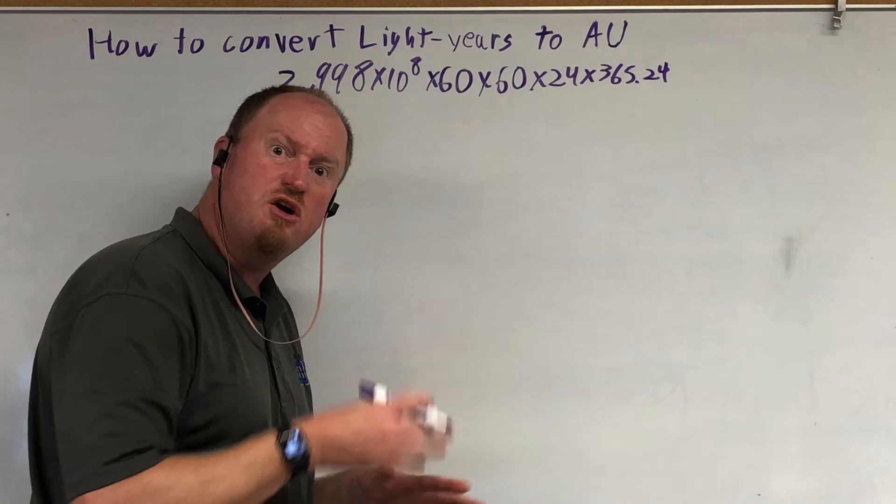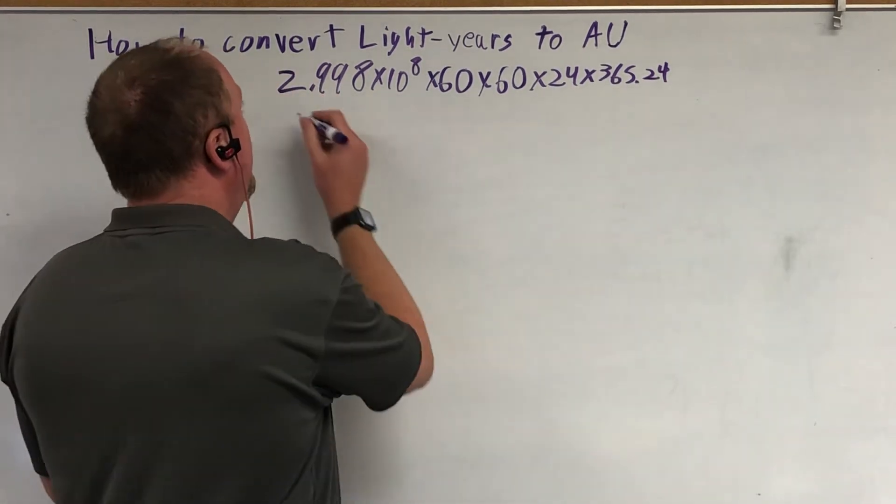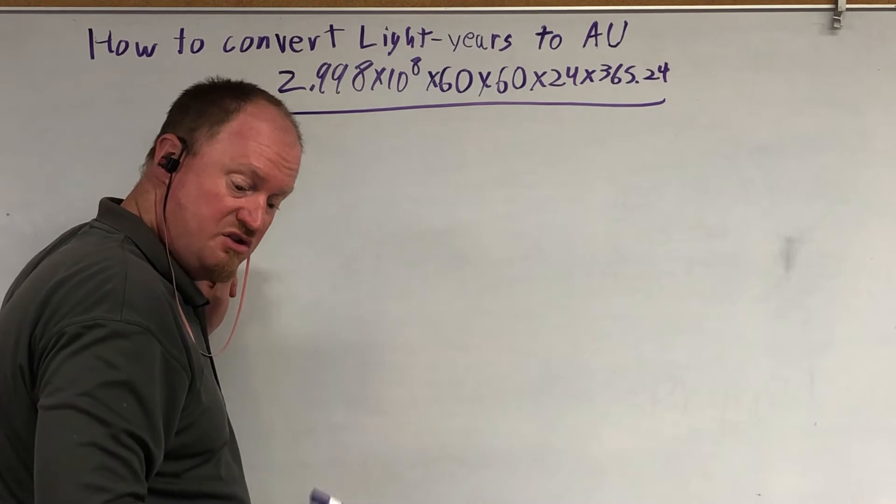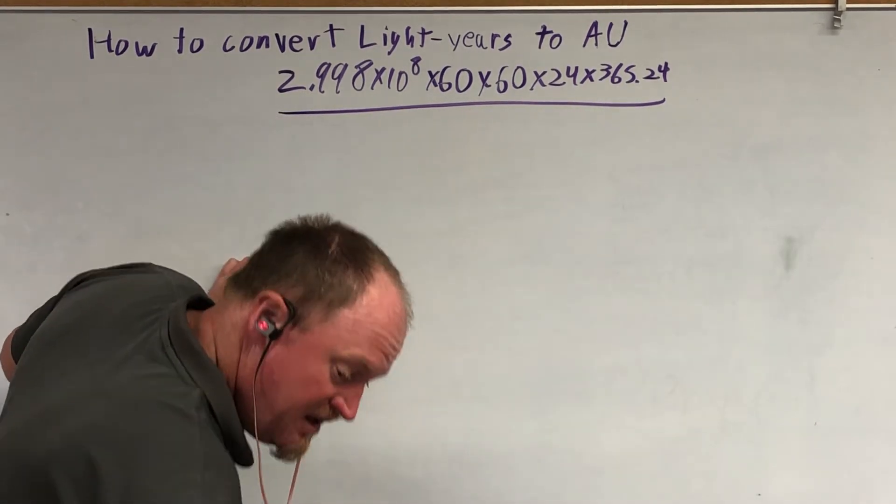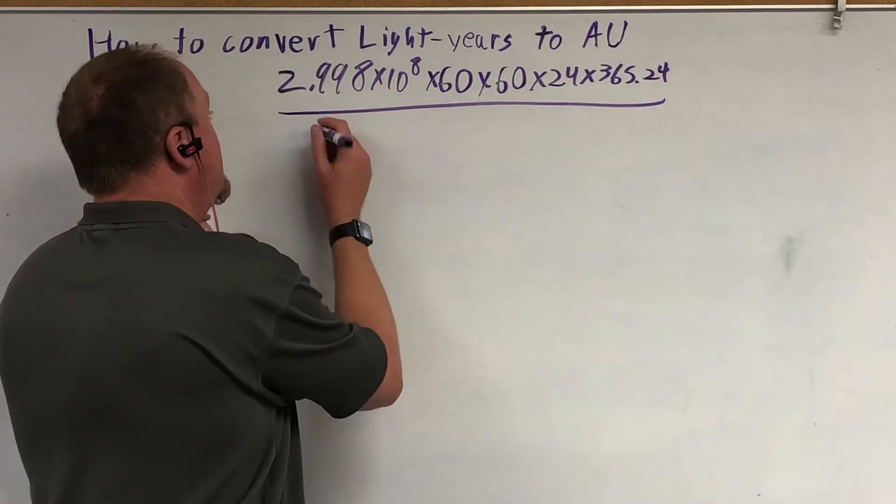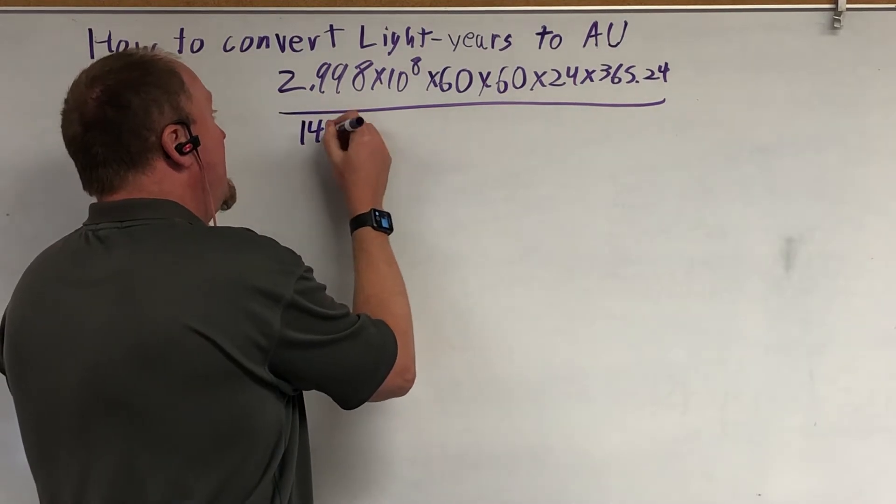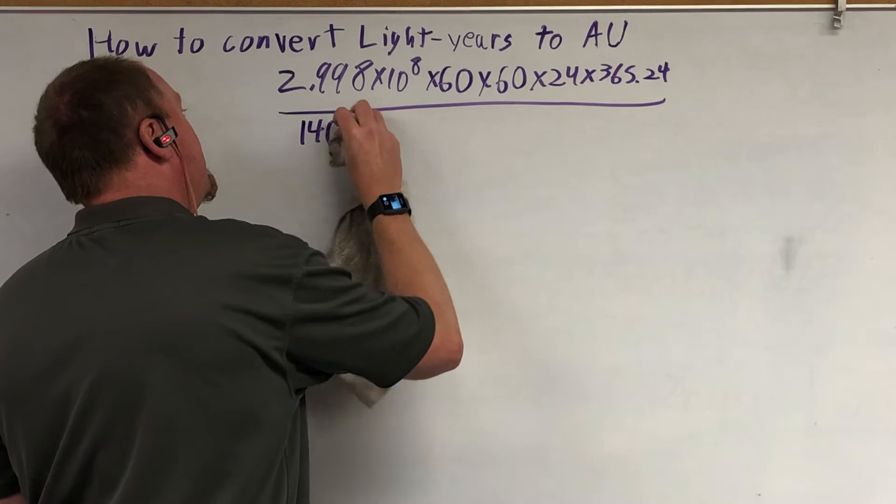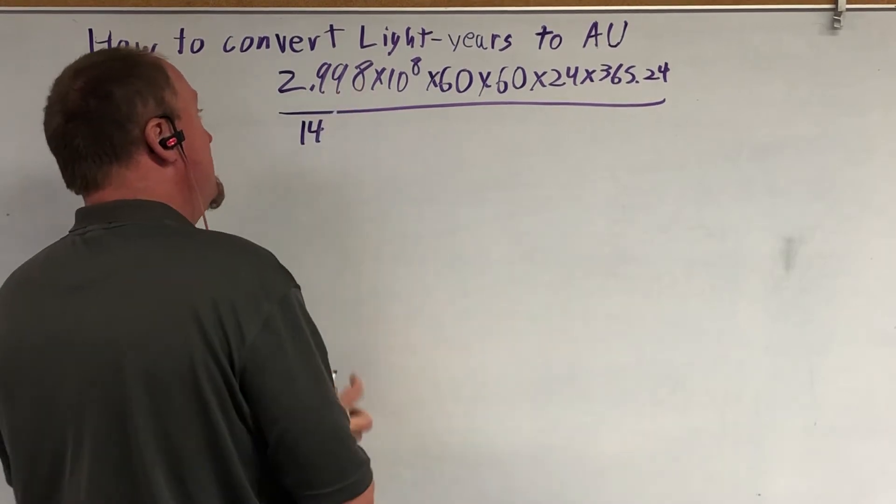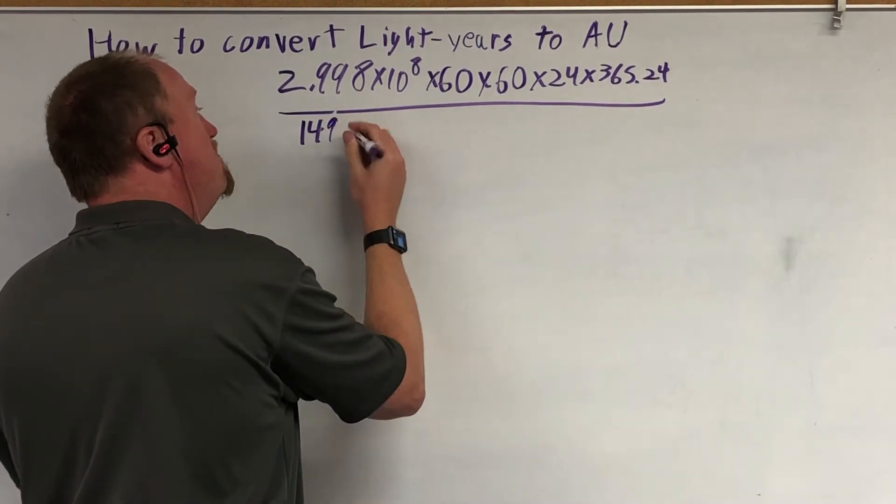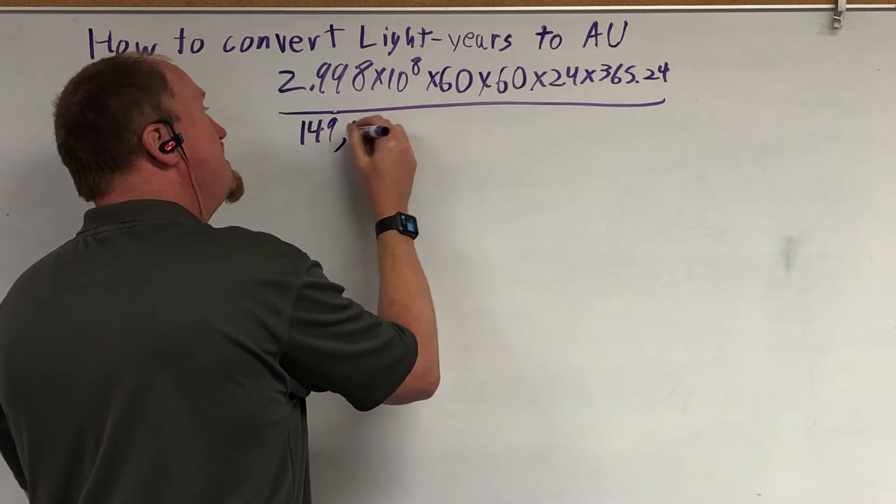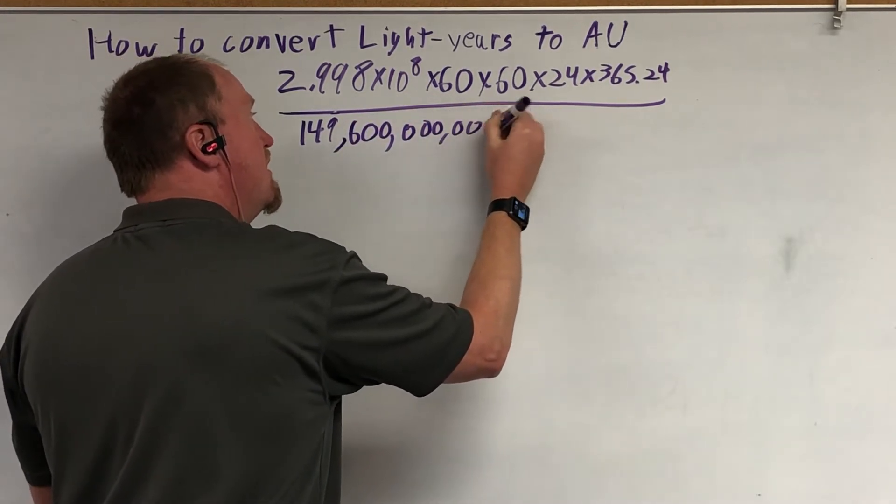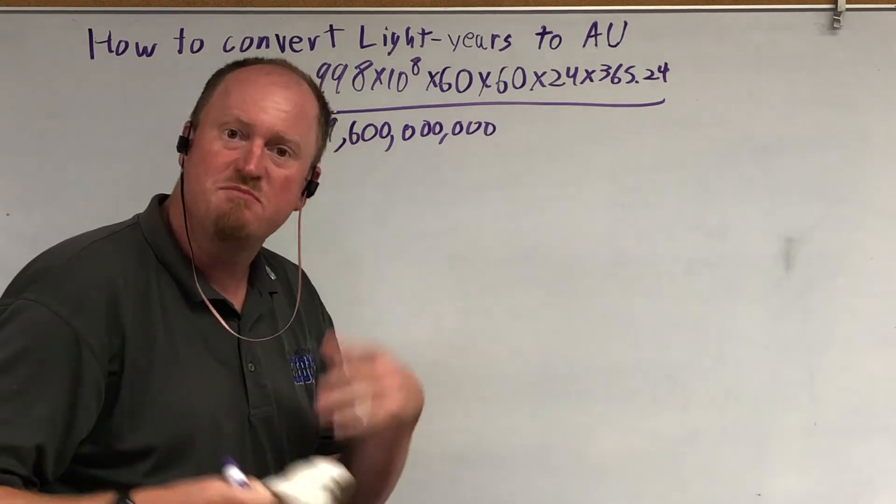I've already done a video on it, so I'm not going to go through every single step there. An AU, an astronomical unit, is simply the distance from the Earth to the Sun. And I've got down that it's 149,600,000,000 meters.